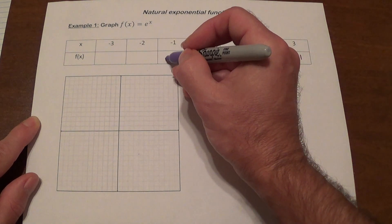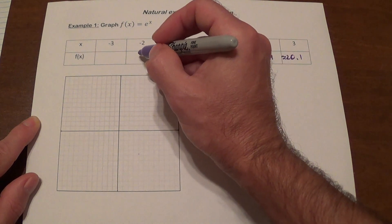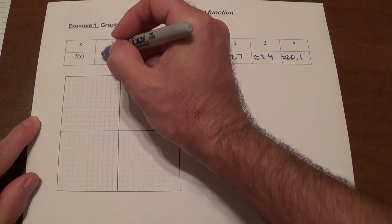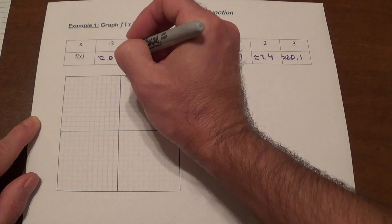For negative 1, it's 0.4 approximately. For negative 2, it's approximately 0.13. And for negative 3, it's approximately 0.05.